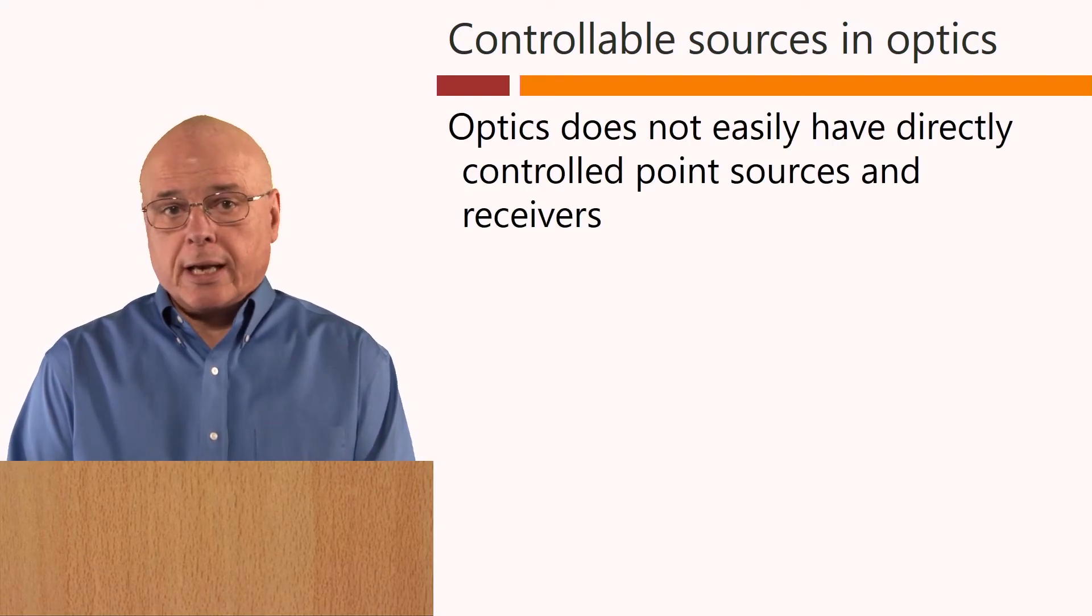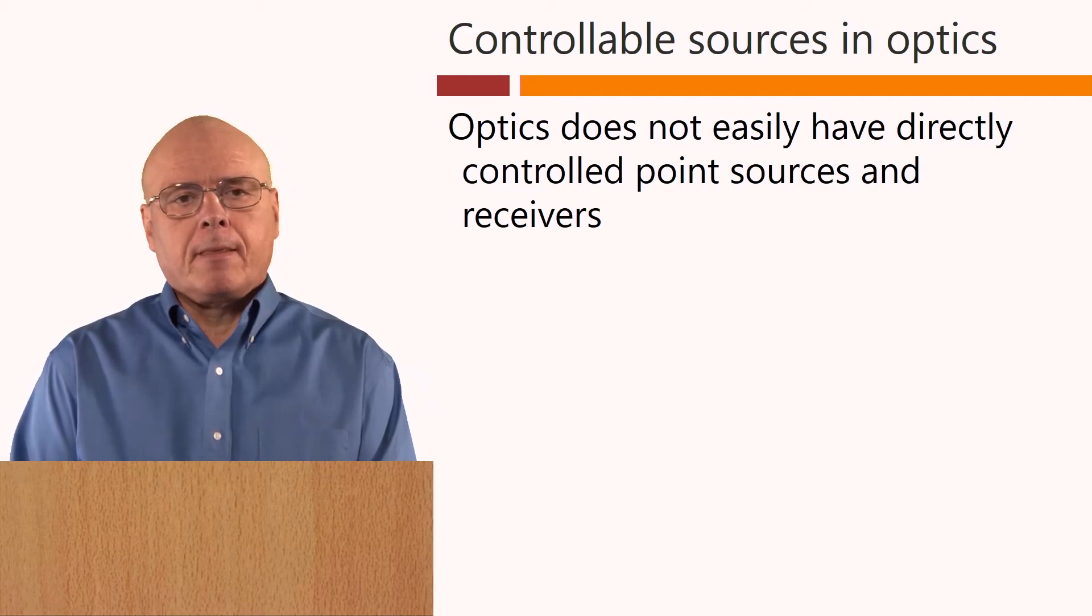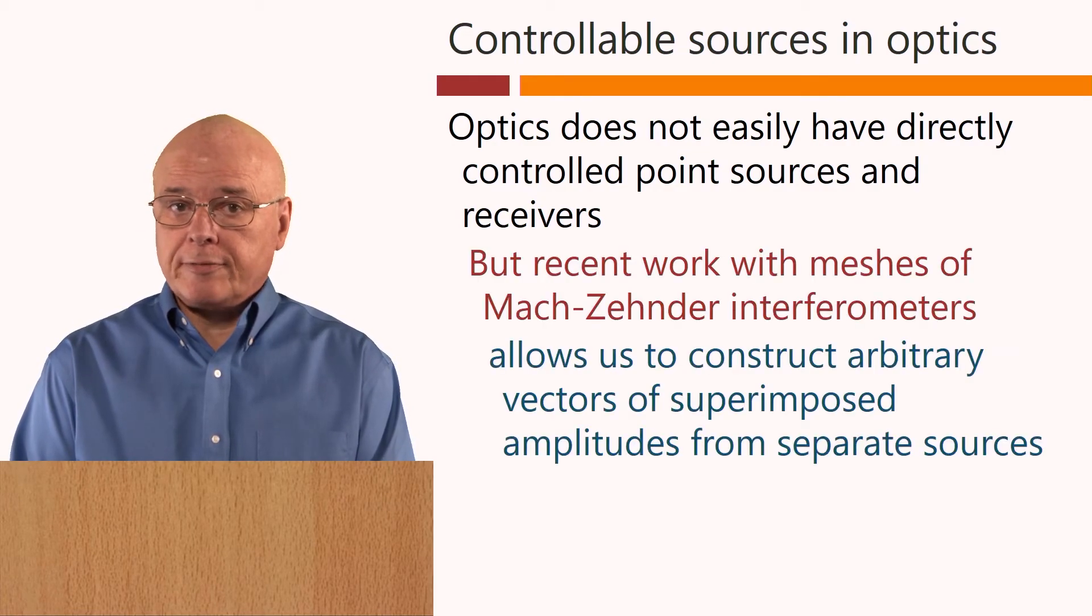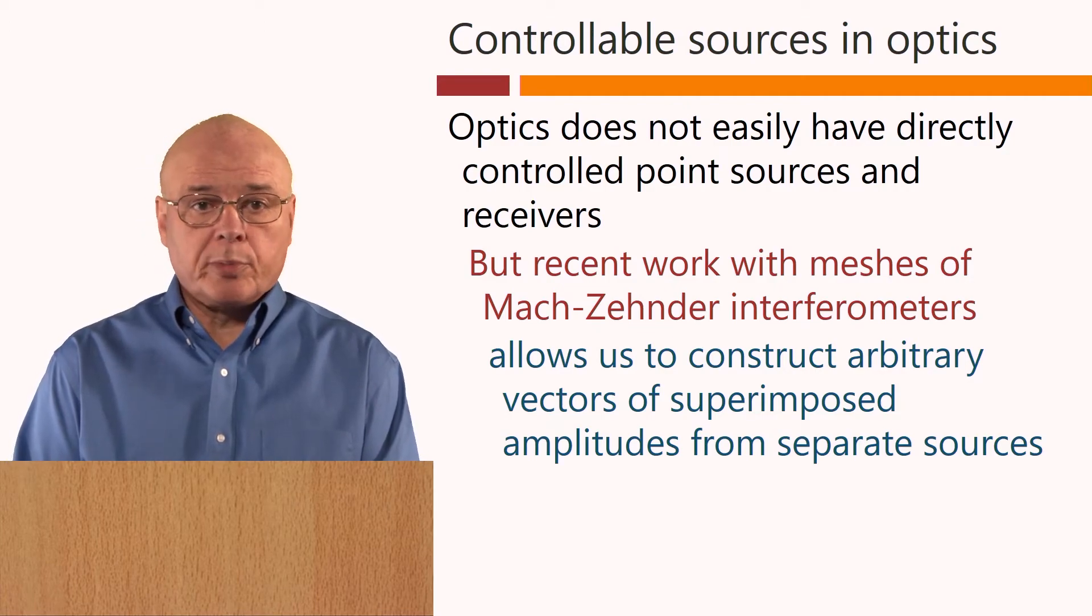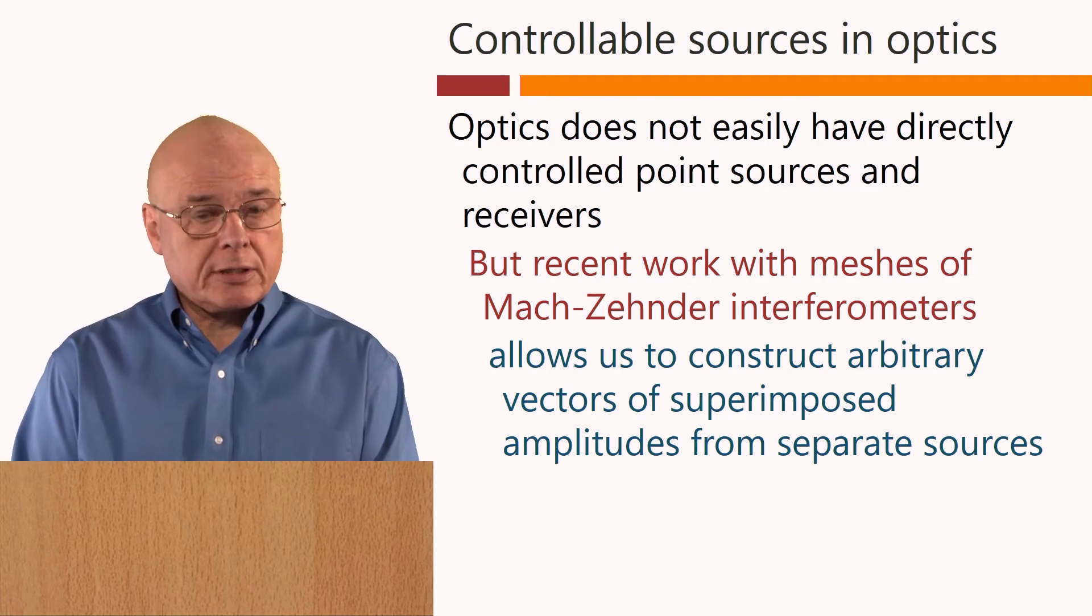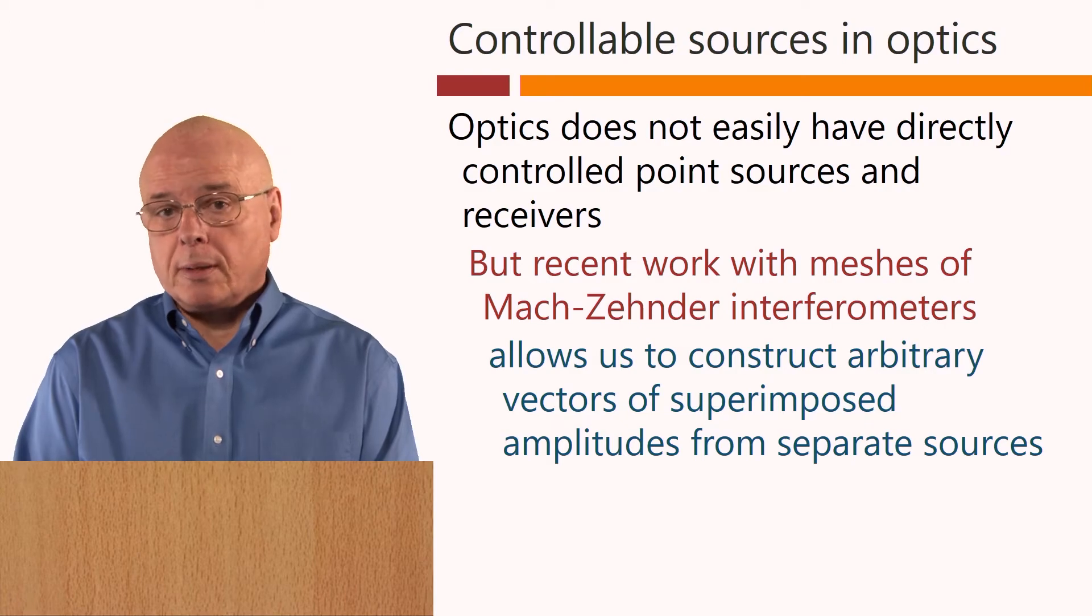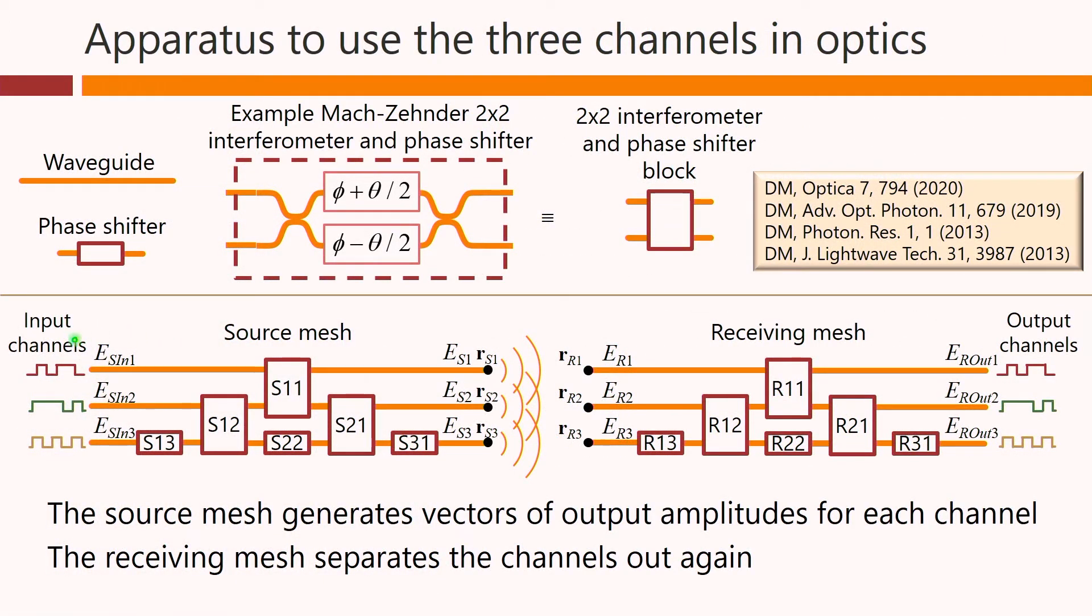Optics, of course, does not easily have directly controlled point sources and receivers. But recent work with meshes of Mach-Zehnder interferometers allows us to construct arbitrary vectors of superimposed amplitudes from separate sources. So we can construct these vectors we've been talking about also in optics. What this source mesh can do is it can take an individual input channel and construct an arbitrary vector of output amplitudes. Here just shown as light emerging directly from waveguides. And similarly, this second input here can construct another orthogonal vector of amplitudes that come out here and so on for the third one. So this can generate our point sources, as it were, from an individual channel and we can have three different orthogonal such vectors of outputs here.